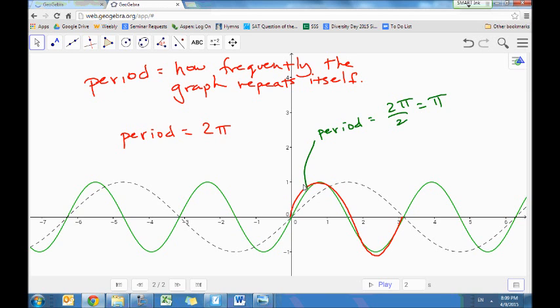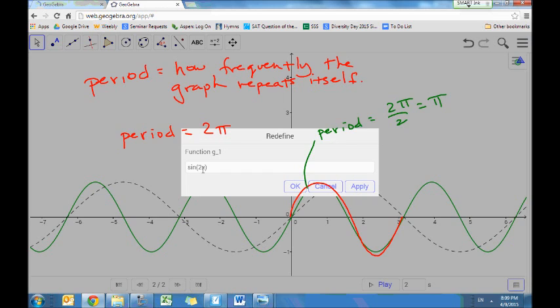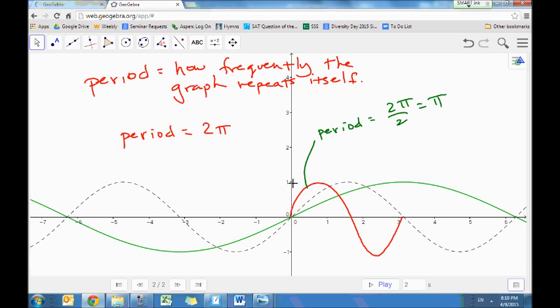If instead I look at the sine of 0.5x, then it'll be twice as wide. In this case, the period is 2 pi divided by 0.5, and that would be 4 pi, which means it would take 4 pi for it to go through a full cycle.